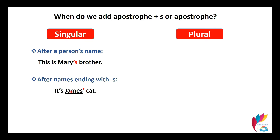The first case: after a person's name. For example, this is Mary's brother, this is Jones's brother, this is Alice's sister. So we have a person's name and we add apostrophe S.